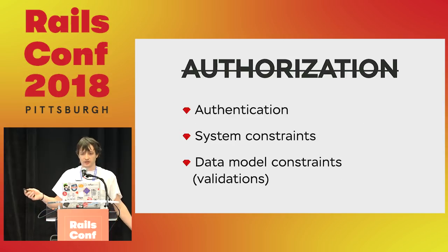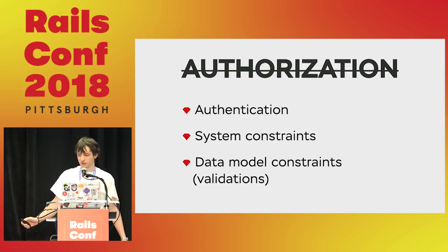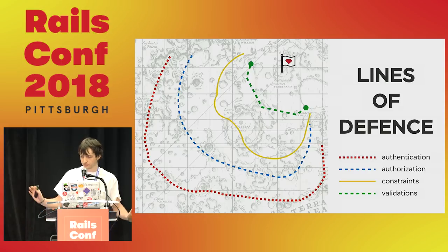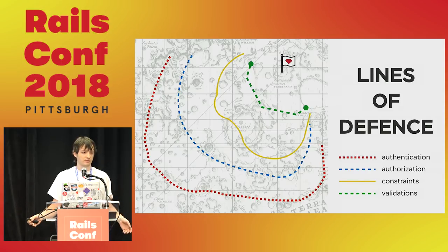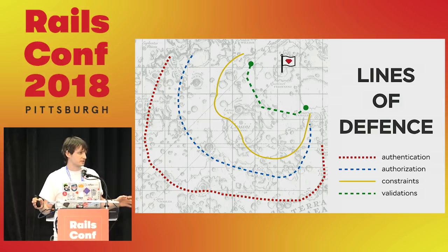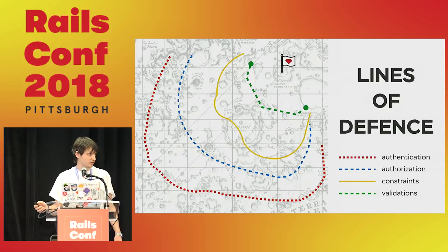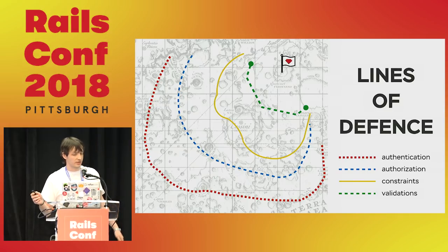And of course there are data model constraints, which we call validations — pretty obvious. So just to sum up, we've got four lines of defense in applications. Not every application has all four, but that's a typical diagram of trying to get to the data.